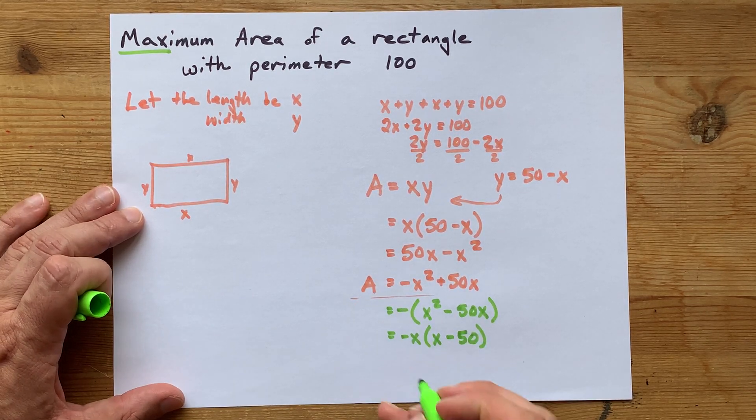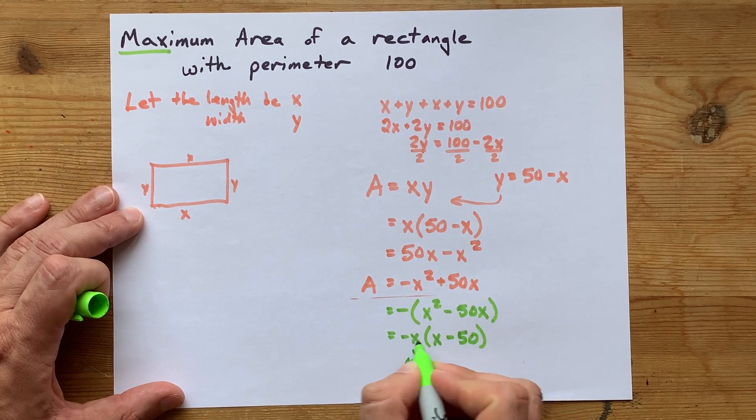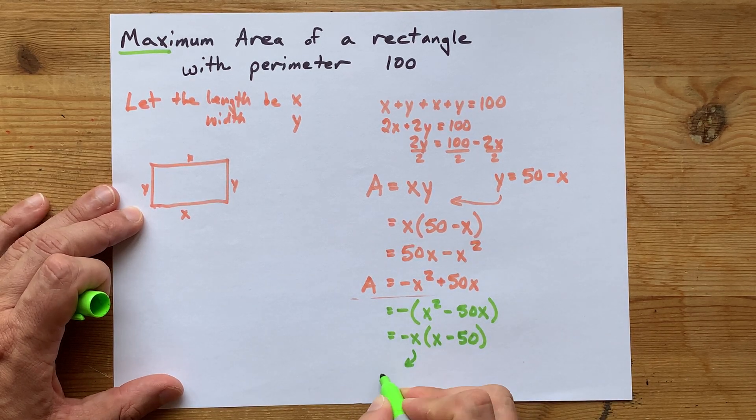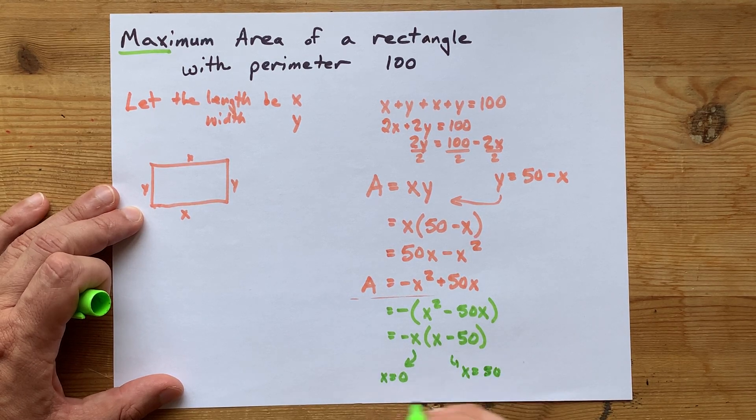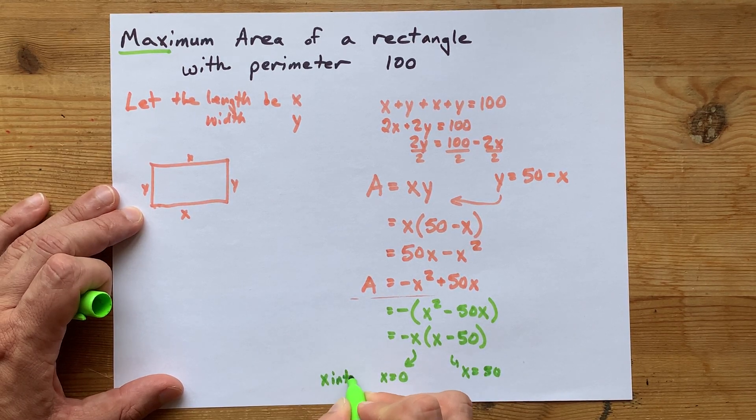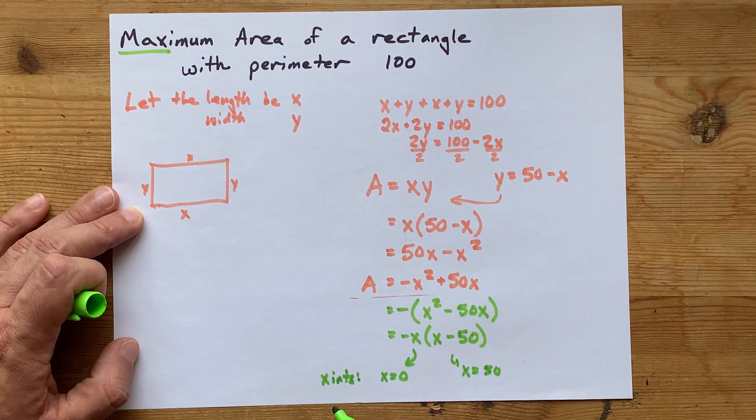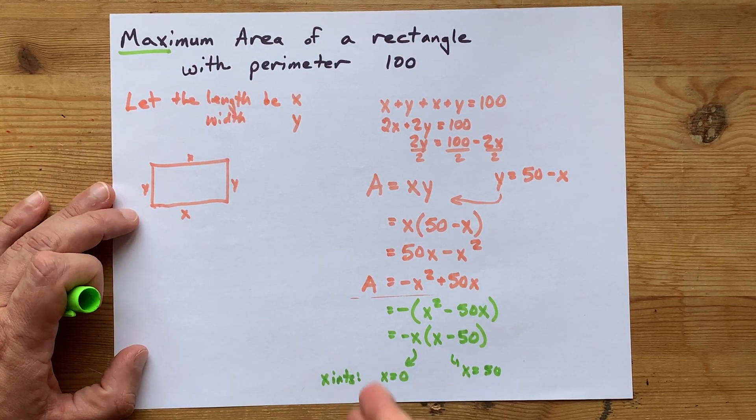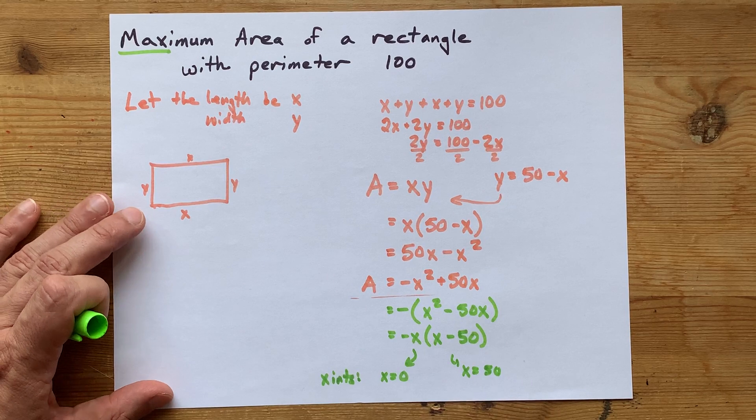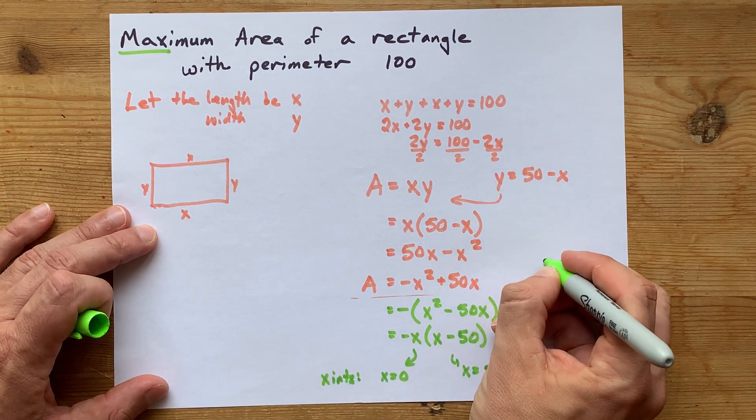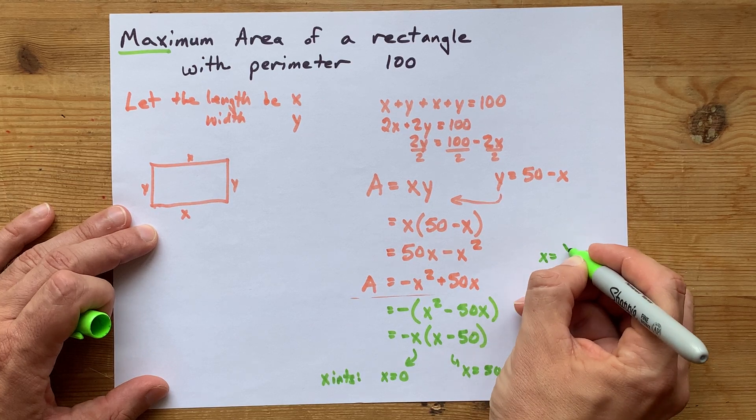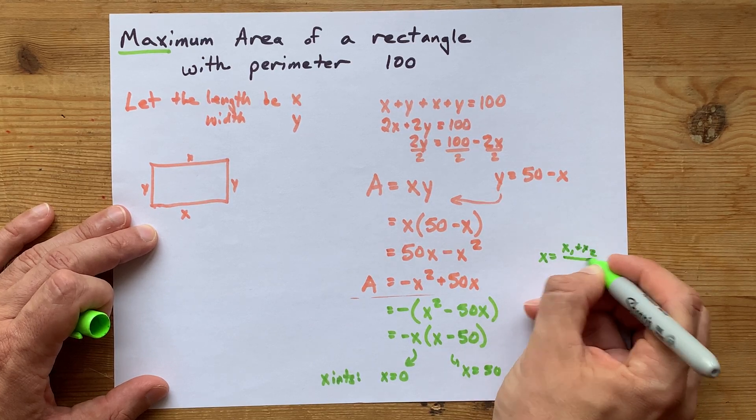The x-intercepts of this, and that's what you get at a factored form after all, is that either x is 0 or x is 50. Those are the x-intercepts. The axis of symmetry, or the place where the vertex is, is the average of those two.